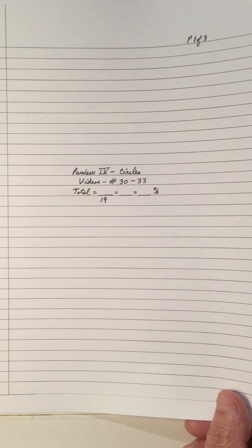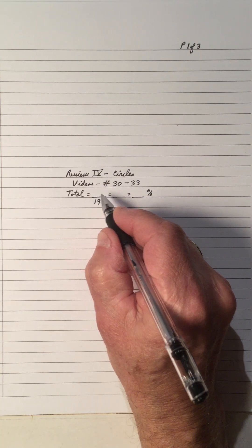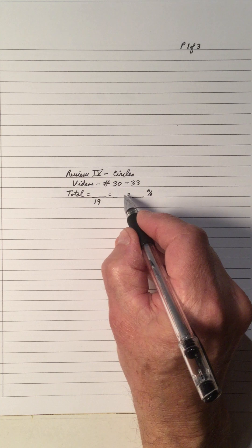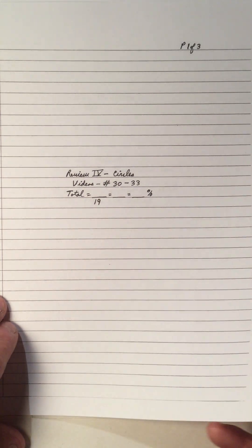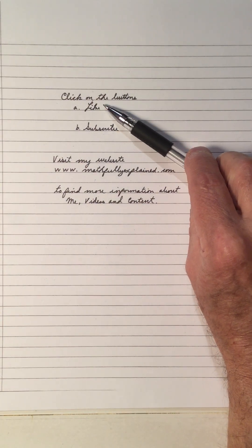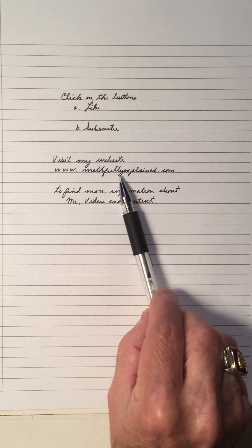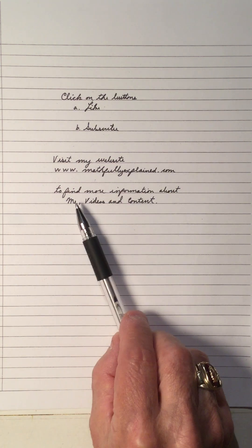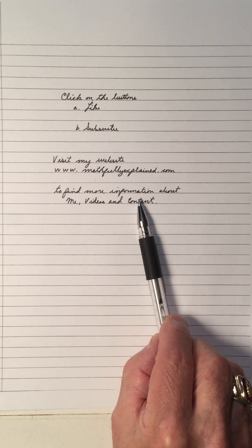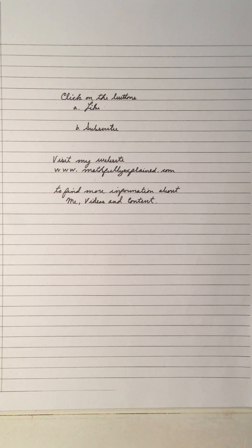Take the sheet away and add up your score. Hopefully you got 19 out of 19 for 100%. If not, divide your numerator by your denominator to get a decimal, then move the decimal two places to the right to get your percent. Hopefully your review turned out great. If you like my video, click the like button and subscribe. Visit my math website at www.mathfullyexplained.com for more information, my videos, and content on my YouTube channel called MathFullyExplained. Thank you for viewing — hope the video helped. Bye-bye.